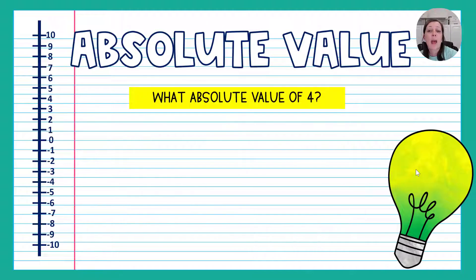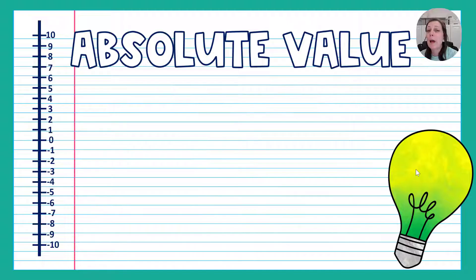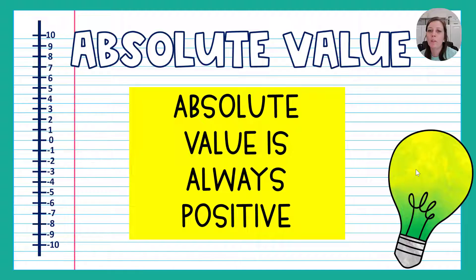The absolute value of four — four is four spaces from zero, so it's four. Since absolute value is a measure of distance, absolute value is always positive. It's never going to be a negative number.